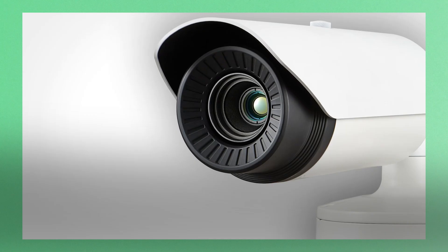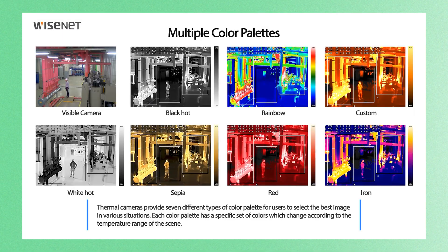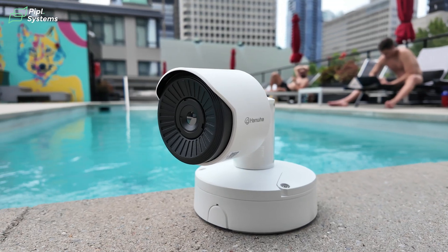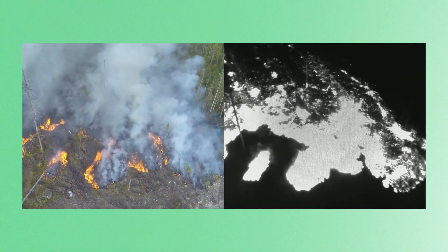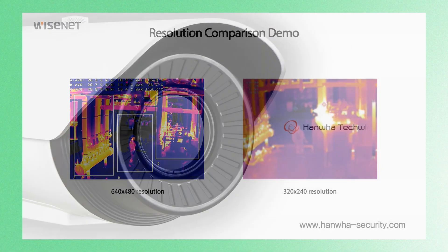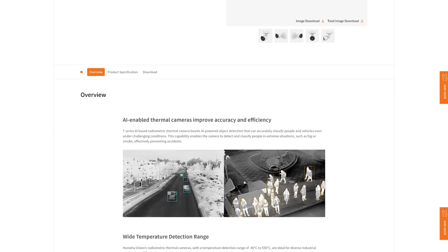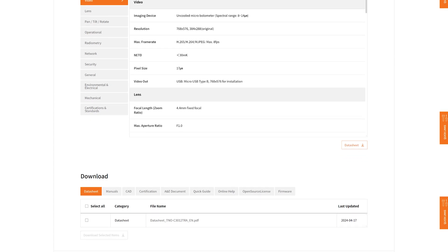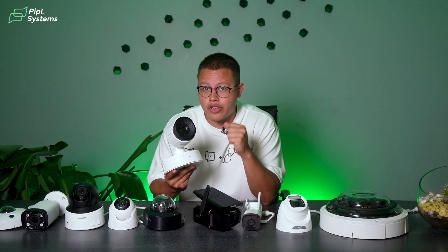This camera I have here is brand new — the Hanwha Radiometric AI Thermal Camera. It boasts AI-powered object detection that can accurately classify people and vehicles even under challenging conditions. This camera can detect and classify people in extreme situations such as fog or smoke, effectively preventing accidents. With a temperature detection range from minus 40 degrees to 550 degrees, it is ideal for diverse industrial applications, monitoring industrial equipment and materials, detecting temperature changes due to aging or connection failure, and enhancing maintenance efficiency while reducing downtime.